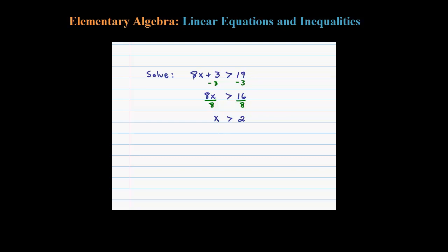So 5 works, right? 8 times 5 is 40, 40 plus 3 is 43, which is greater than 19. 10 works, 20 works, and so on. When you have infinitely many answers, there's a couple ways to present them.